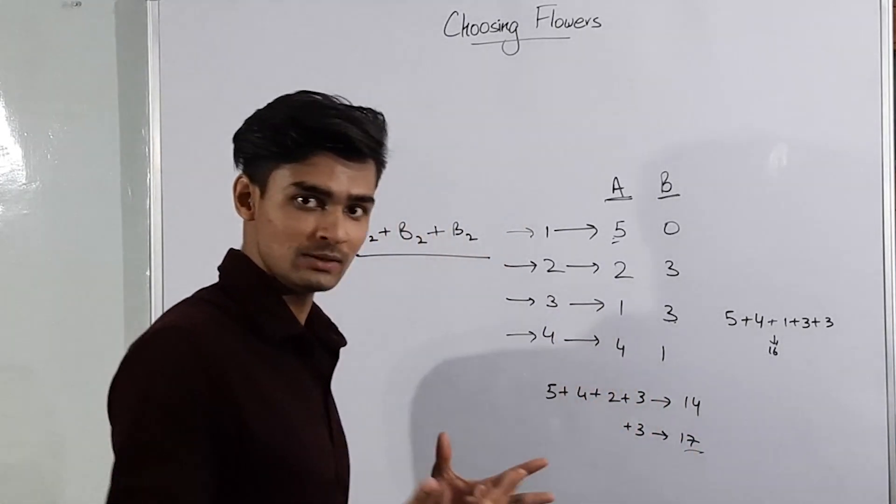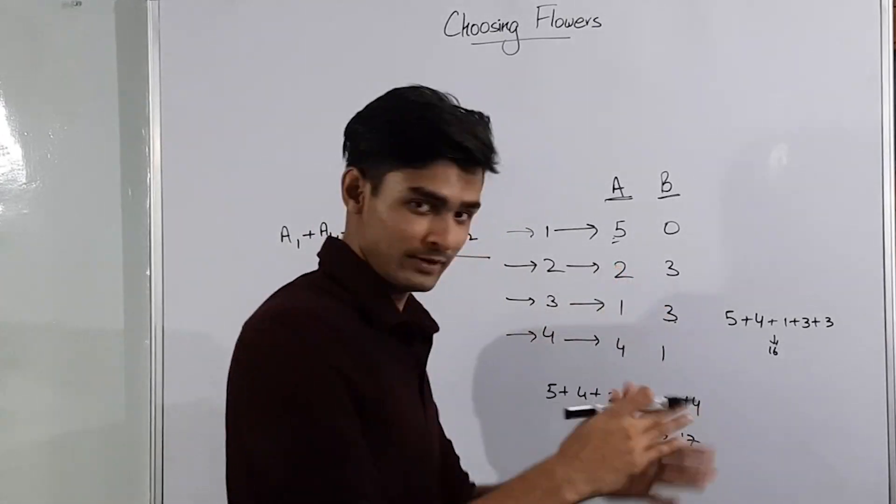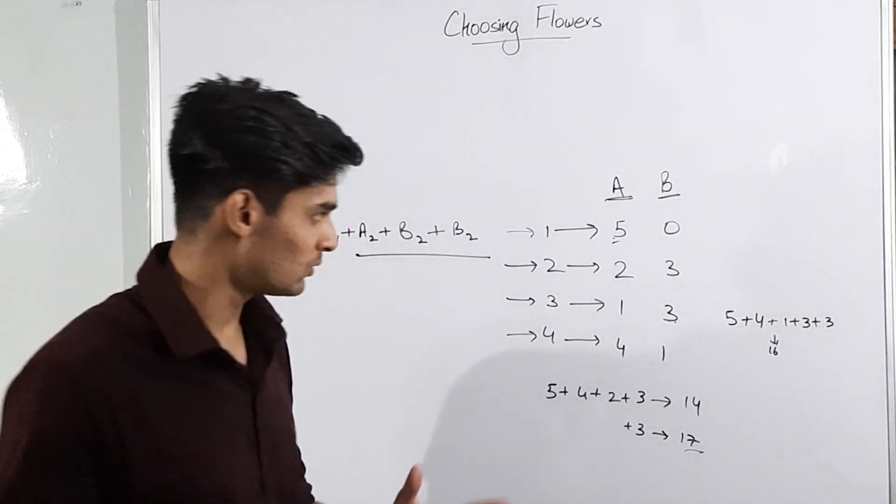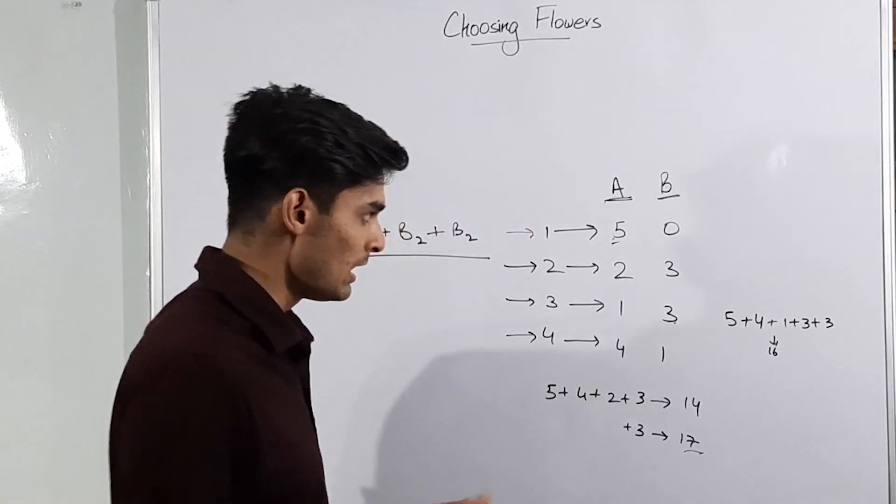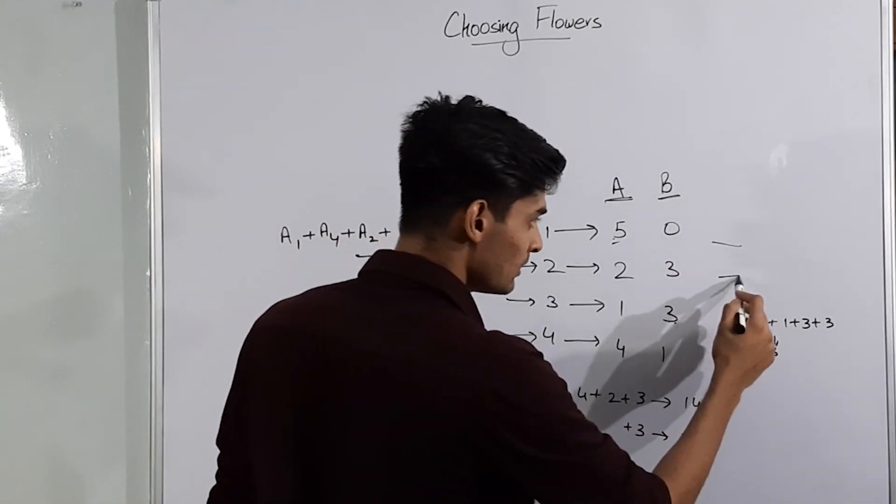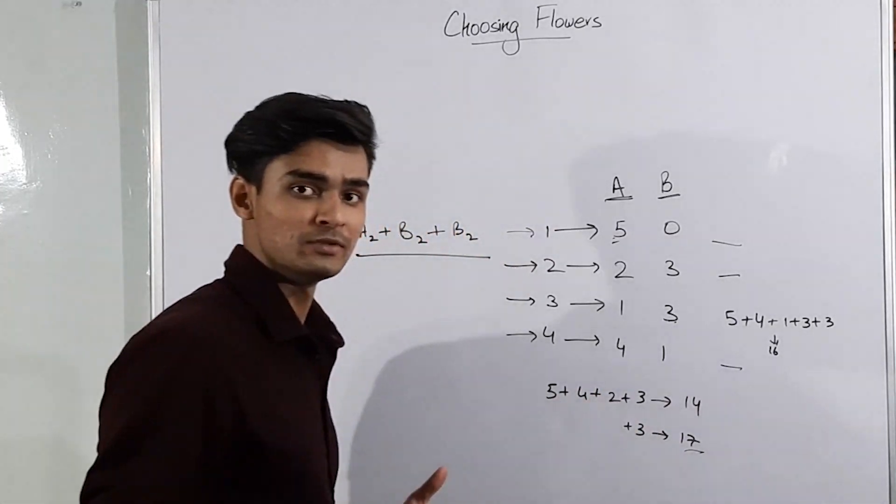So basically we have to find some way in which we can fix the BI and then find the answer. Now instead of thinking of greedy approach, we can actually make use of some binary search here. We can find the answers for every BI and then return the maximum of these.